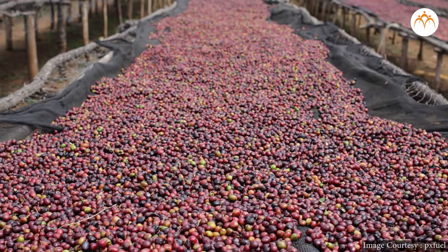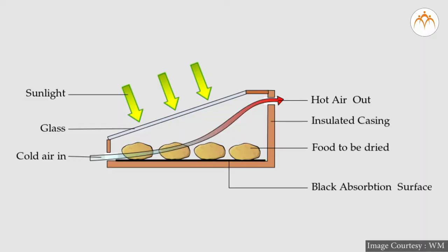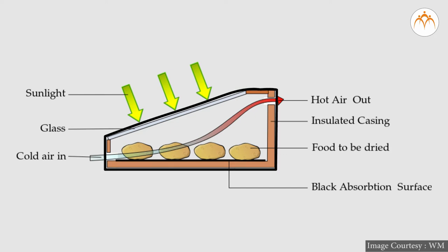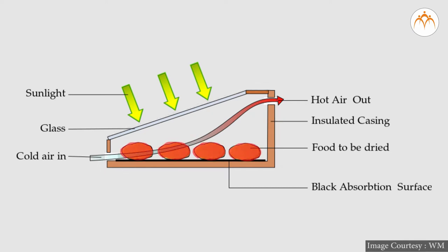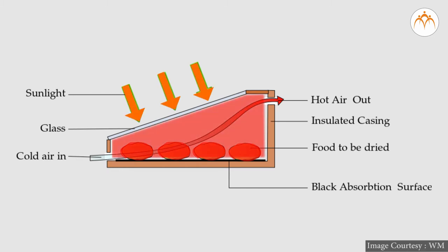I have earlier told you about sun drying method. But nowadays, there are solar dryers designed for drying of food items to be stored. In solar drying, there are enclosed chambers. Food material to be dried is stored in these chambers and air in the chamber is heated using sun rays. Finally, food items get dried.